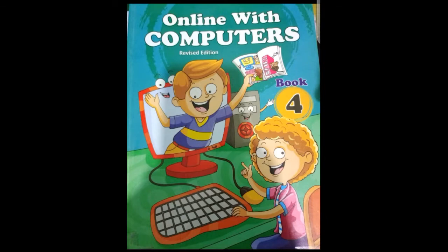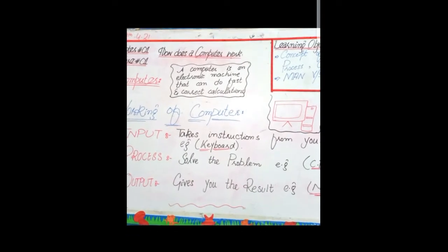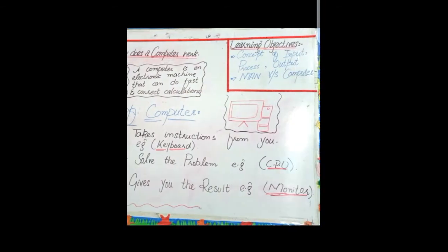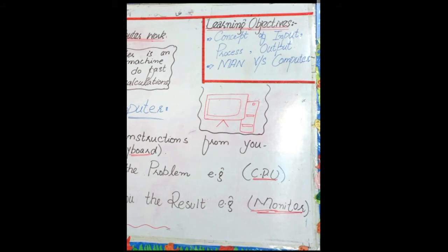Now come to our first chapter which name is How Does a Computer Work. Here we have the learning objectives. Number one, you have the concept of input, process, output - means you have to learn what is input, what is process, and what is called output. Number two, you have man versus computer - how can people compare computer with man.